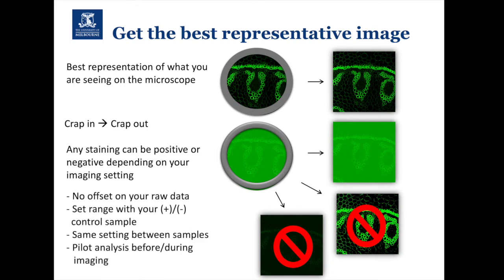Some rules to follow: do not use offset on your raw data — offset is a setting where you can clip the lower-end intensity values from your image. You should set your acquisition ranges using both positive and negative controls. If you want to compare data, acquire each different set with the exact same settings. One really important thing is to do a pilot analysis before and during your imaging — am I getting the data I want from my actual experiment?